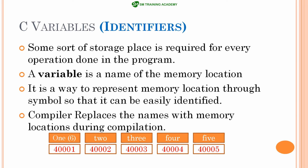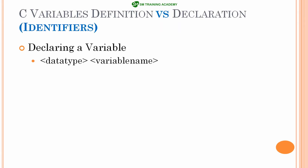Variables are nothing but storage places in a programming language, useful for storing particular data and then retrieving it back from the same memory. For any operation you can use this storage location by declaring and defining the variable based on your need and the default data types available in C language. These variables are also called identifiers because the variable name identifies the memory location. This is the basic syntax for declaring a variable, similar to how we declared the char data type, and you can also declare an int-based variable like this.